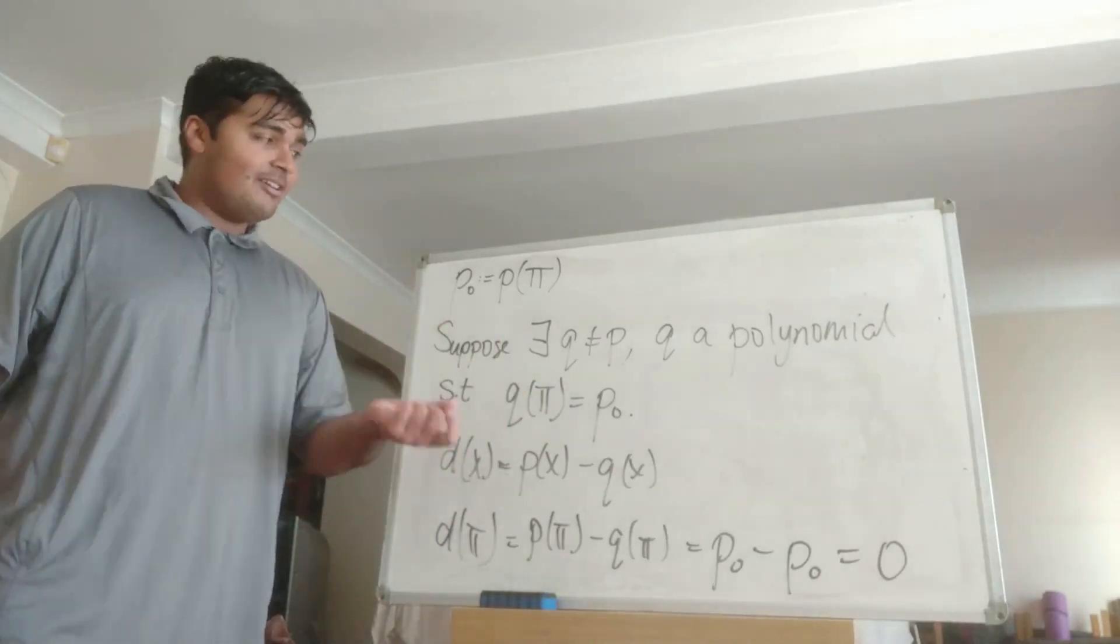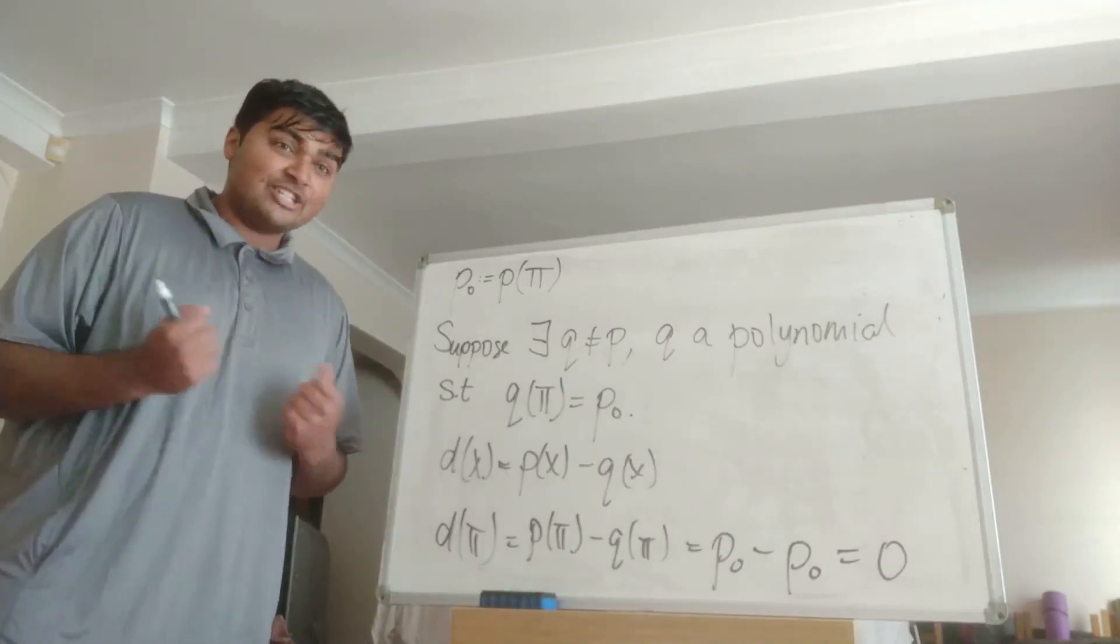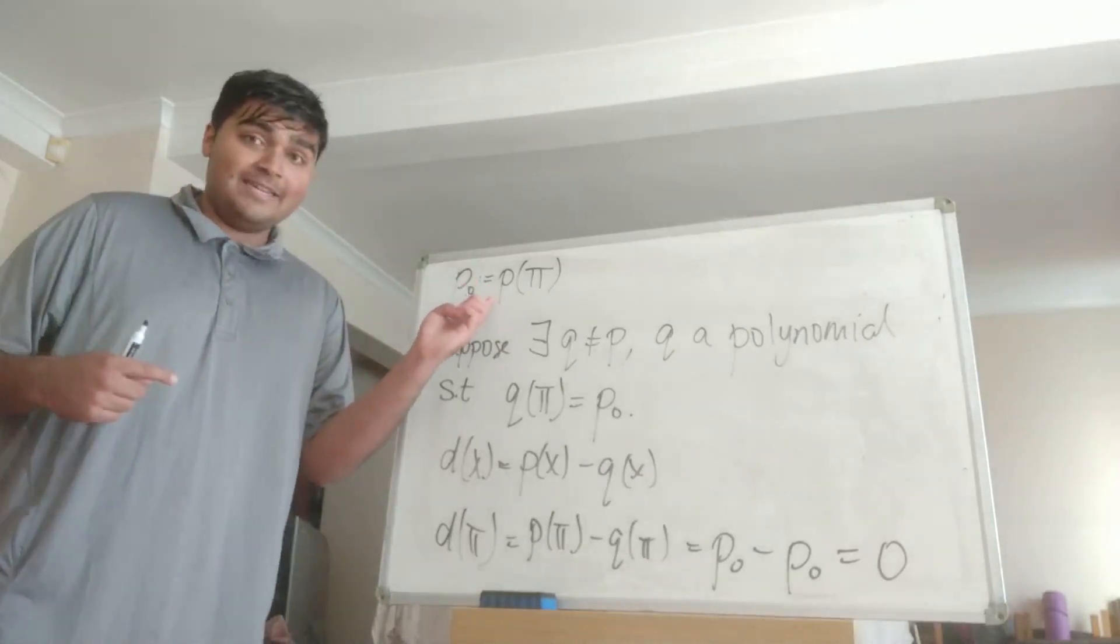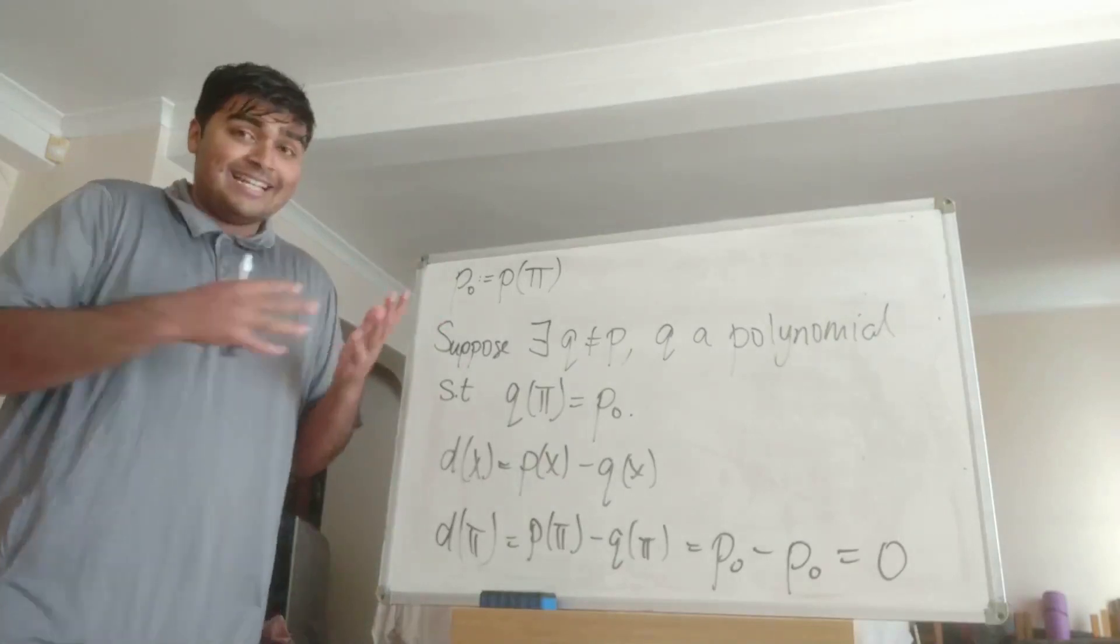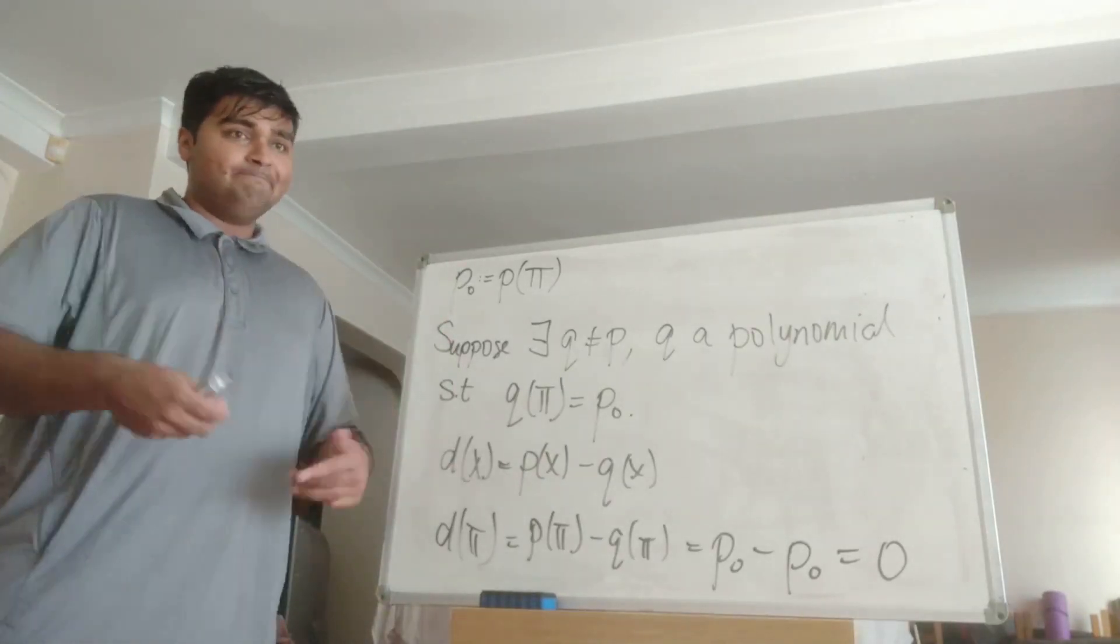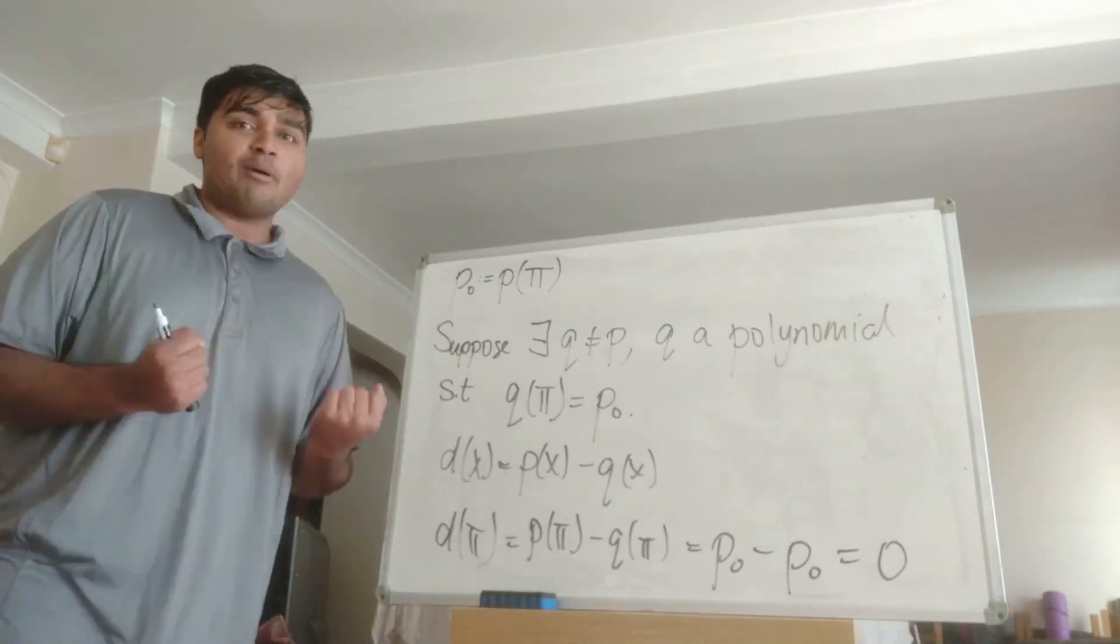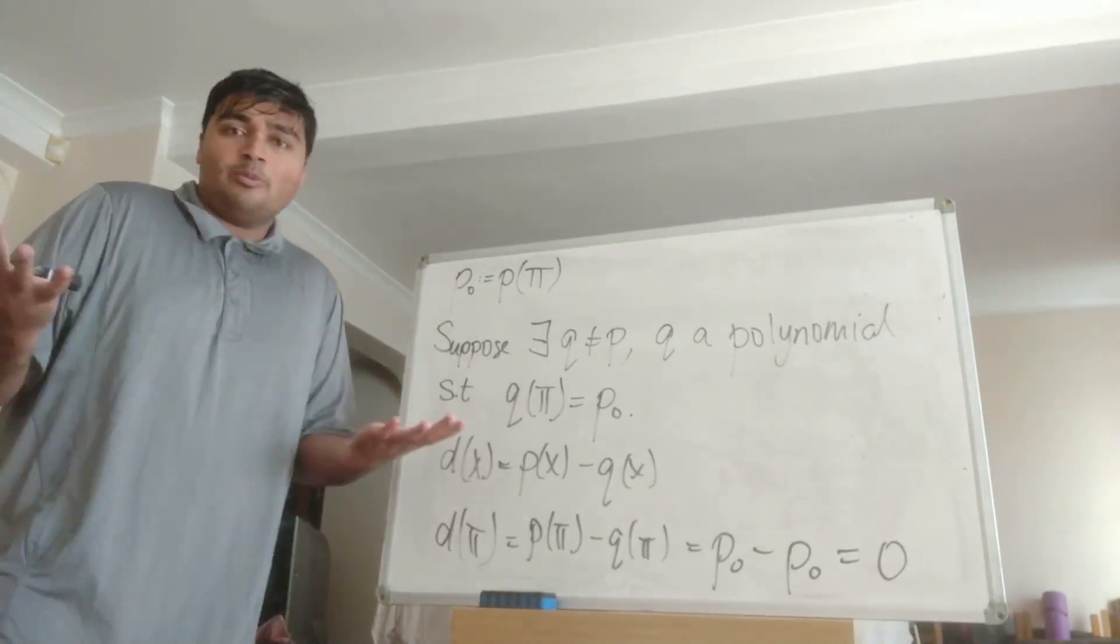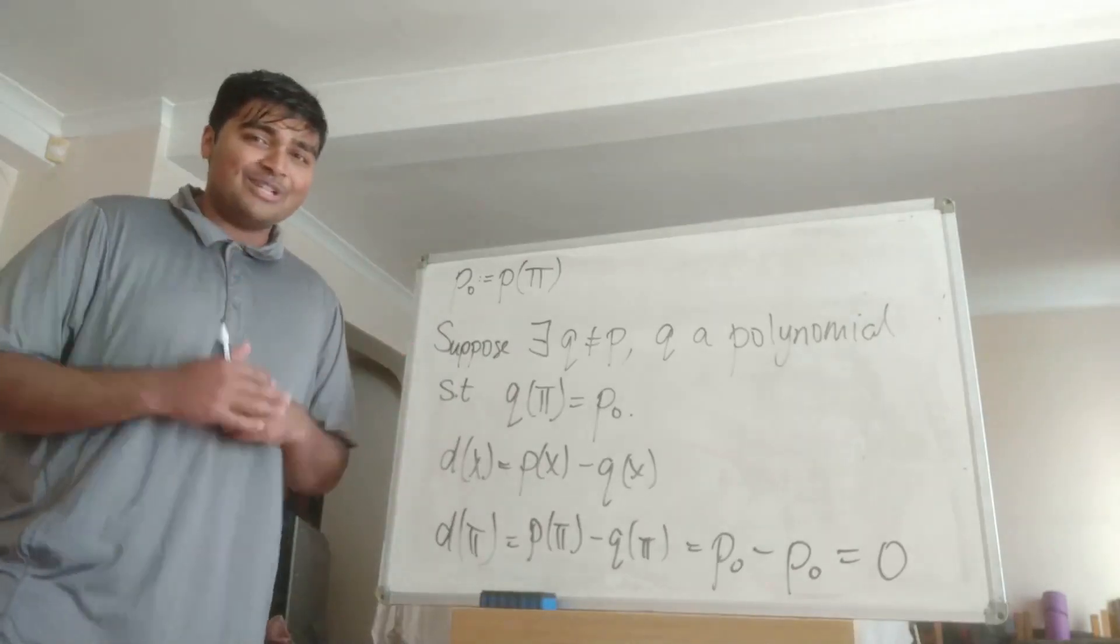Hence, that means there's only one polynomial with non-negative integer coefficients such that when you plug in pi you get P_0 and that one polynomial is the P here that we're looking for. So basically now what this tells us is if we can find some polynomial, let's call it s(x), such that s(pi) equals P_0, then we're done, then we know that s must equal P and we'll be finished because we found P.